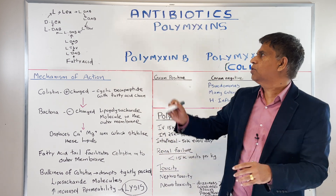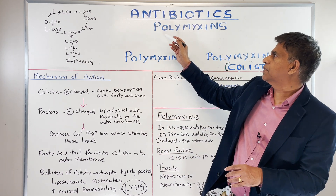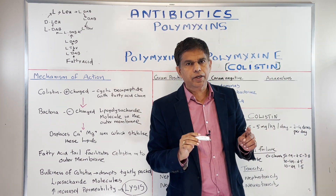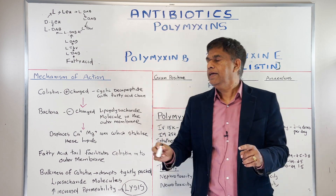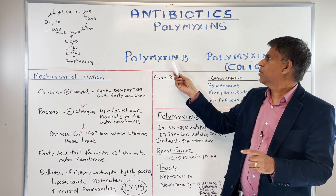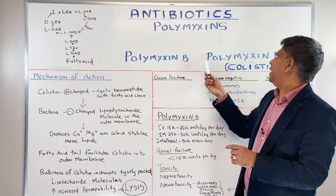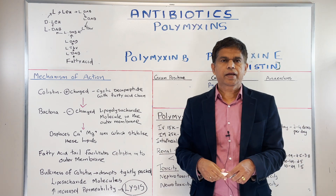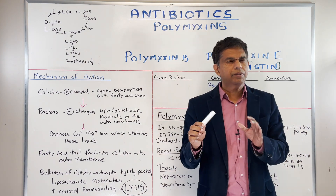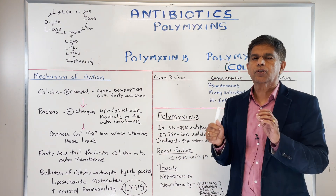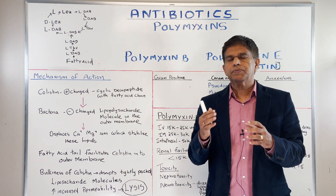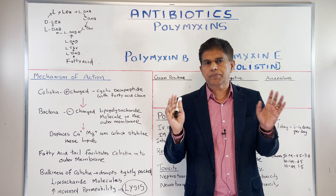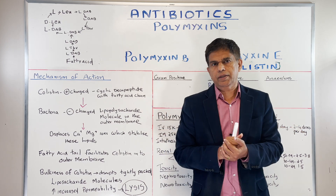The group is called polymyxin. Two drugs we're going to talk about in that category: polymyxin B and polymyxin E, which is colistin. Everybody is pretty much familiar with colistin — it's one of the classic drugs and it's been on the market for a very long time.